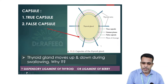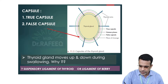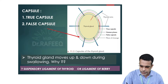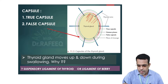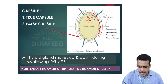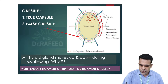Now let us see the capsular coverings of the thyroid gland. We have two coverings. Number one is the true capsule, which is very closely adherent to the thyroid tissue. It is formed by the condensation of the connective tissue of the thyroid gland itself, peripherally condensed to form the true capsule. Outside we have the false capsule, which is somewhat thicker and is derived from the pre-tracheal fascia.